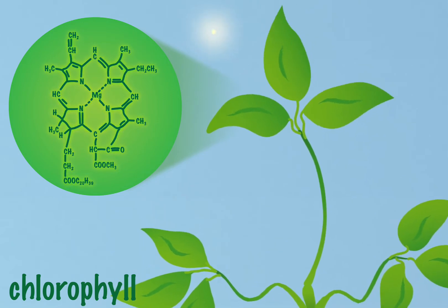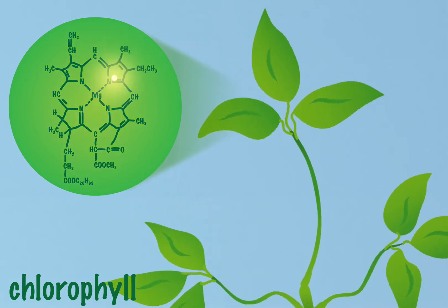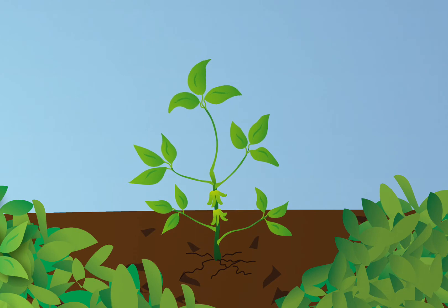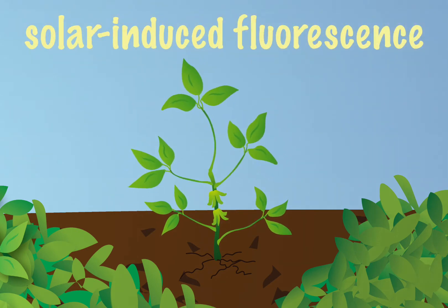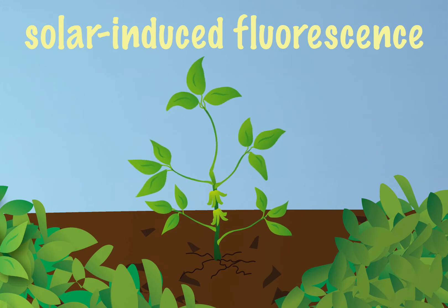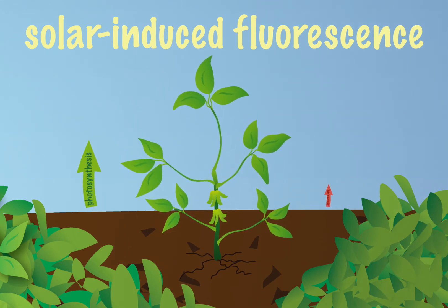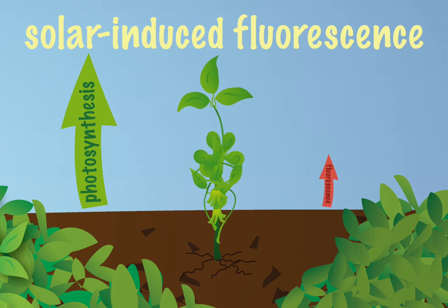The thing is, the amount of light I end up putting out this way—it's called solar-induced fluorescence if you want to get all technical—it depends on how much photosynthesis I've got going on. More photosynthesis, more fluorescence. And when I close up shop, no more outgoing photons. It's like a built-in status report for us plants.